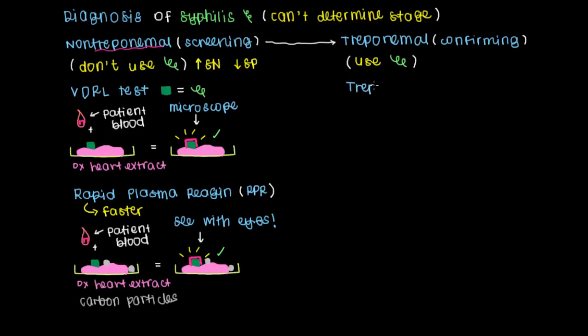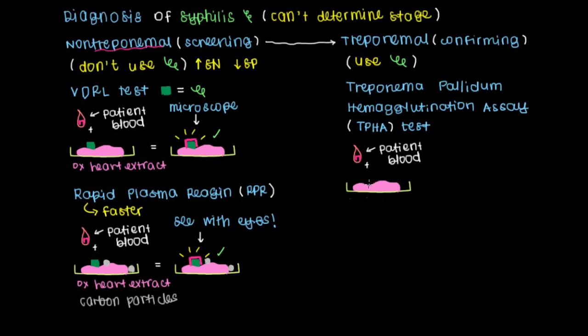The first test I'll mention is what's called a treponema pallidum, or just the name for the syphilis bacterium, the treponema pallidum hemagglutination assay, or we can abbreviate this as a TPHA test. The setup for this test is very similar to what we saw earlier with the non-treponemal test, but instead, this is a sample of the syphilis antigen.